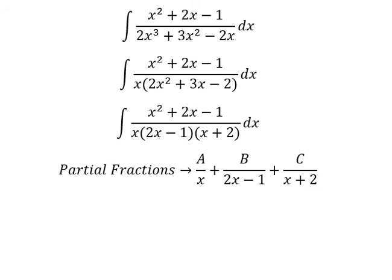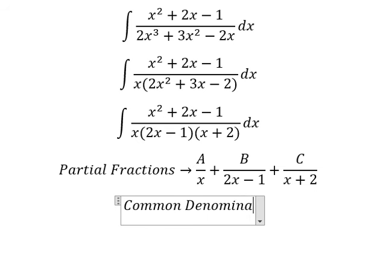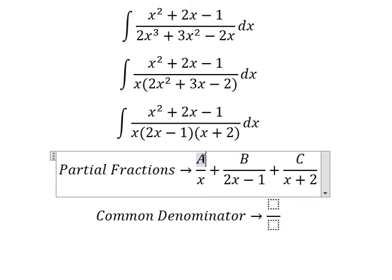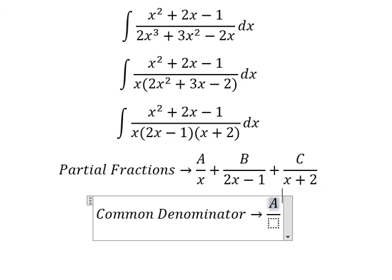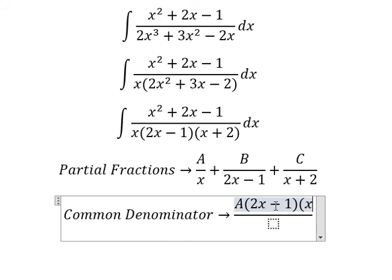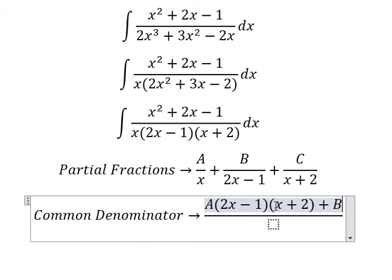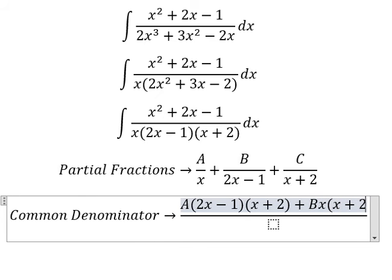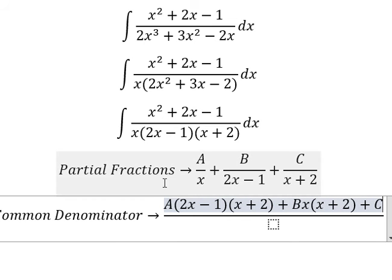Now we do the common denominator. Capital A will multiply by 2s minus 1 and s plus 2. Capital B multiplied by s and s plus 2. Capital C multiplied by s and 2s minus 1.